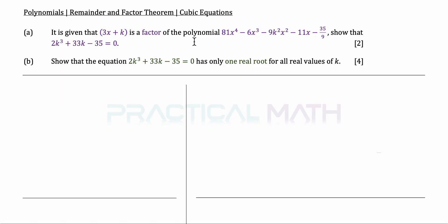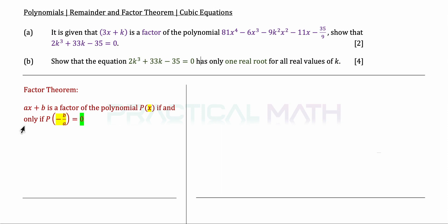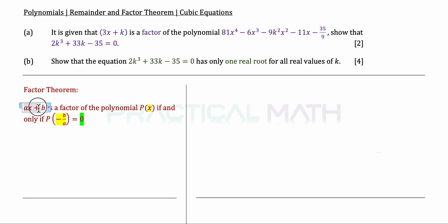Now let us begin this question. First off, the question states that 3x plus k is a factor, so we want to revise the factor theorem. By the factor theorem, ax plus b is a factor of the polynomial p of x if and only if p of negative b over a equals 0. This means we can set ax plus b to equal 0, giving x equals negative b over a, and then substitute that value into the polynomial — and the remainder must be 0 for it to be a factor.